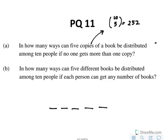What I can say is: book one can go to any of the ten people, so there are ten possibilities. Book two can still go to any of the ten people, book three can also go to any of the ten people, book four can go to any of the ten people, book five can go to any of the ten people.